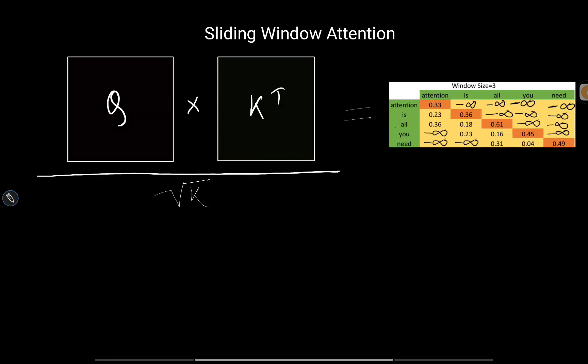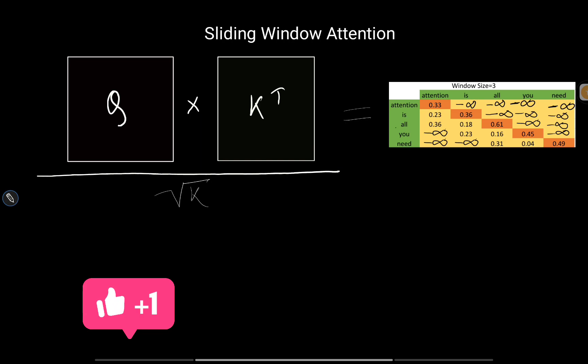In self-attention, we multiply Q with K transpose, then to minimize the variance of this dot product we divide it by the square root of K — which is the embedding size — and once that is done we get our attention matrix. In multi-head attention on the decoder side, the main task is to produce the next best token, so to avoid cheating we mask the future tokens with negative infinity.